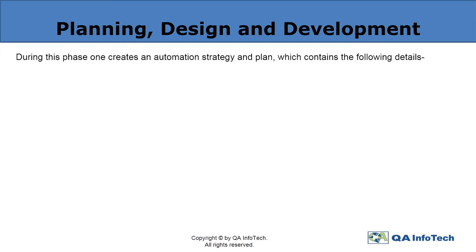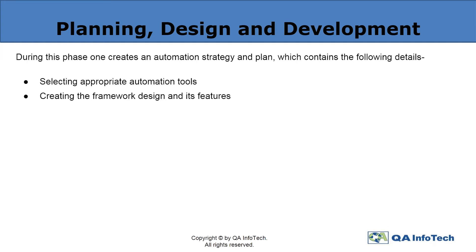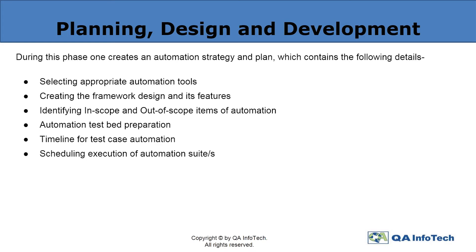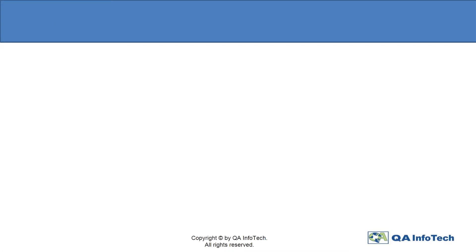The next important step is to create an automation strategy and plan, which starts with selecting the right tool, creating a framework design and the features, chalking out the items that are planned to be tested and the ones that are not, preparing an automation test bed — that is the test environment — which consists of specific software, hardware, network configuration, operating system, etc., charting a timeline for test case automation, scheduling the execution of automation suites, and finally evaluating the deliverables of automation testing.